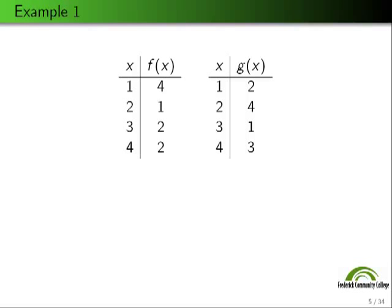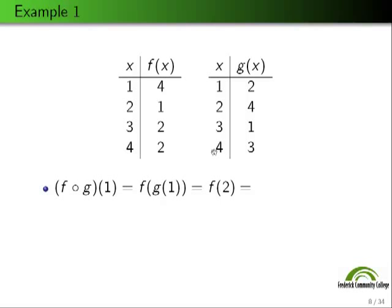Here are two functions defined in tabular form. f sends 1→4, 2→1, 3→2, 4→2; and g sends 1→2, 2→4, and so on. Let's evaluate f∘g(1). By definition, that is f(g(1)). We plug 1 into g: g sends 1 to 2, so f(g(1)) = f(2). And f sends 2 to 1. So f∘g(1) = 1.